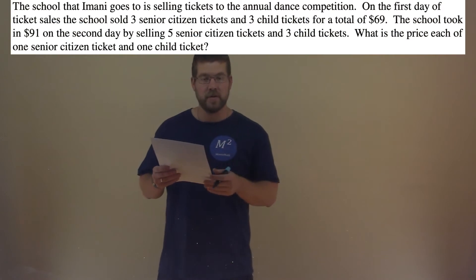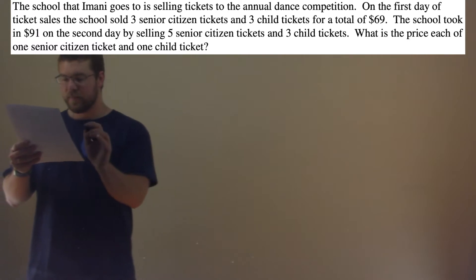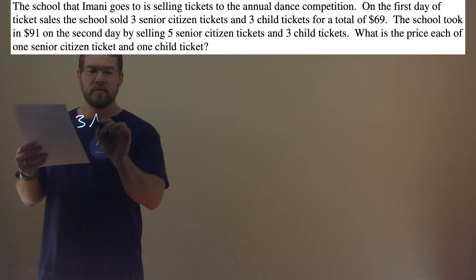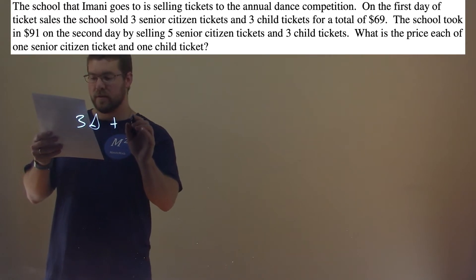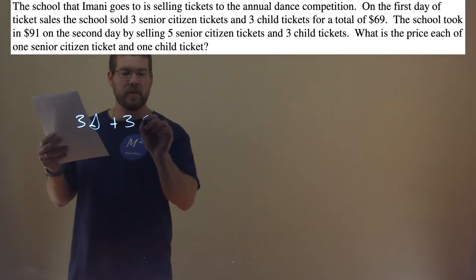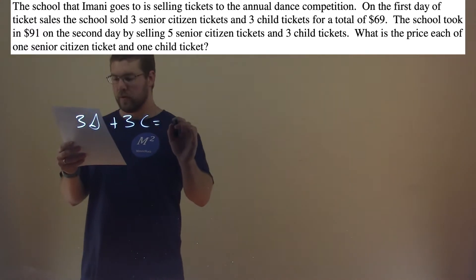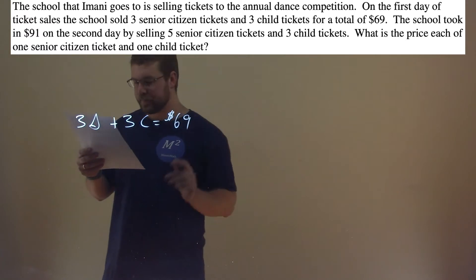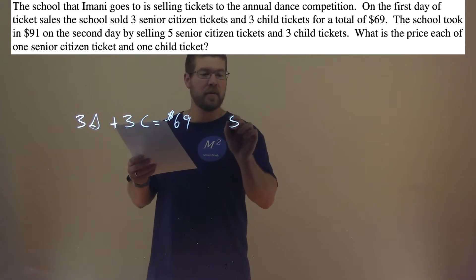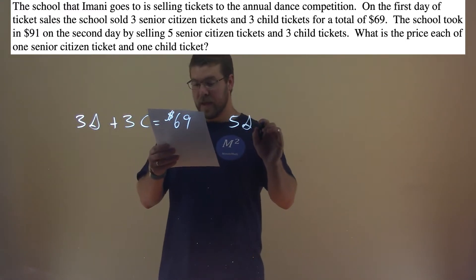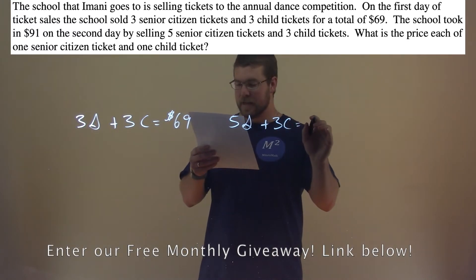So we need to make two equations here. The first day they sold three senior citizen tickets and three child tickets. S will stand for senior citizen tickets and C will stand for child tickets. That was a total of $69. On the next day, the school took $91 by selling five senior citizen tickets and three child tickets, for a total of $91.